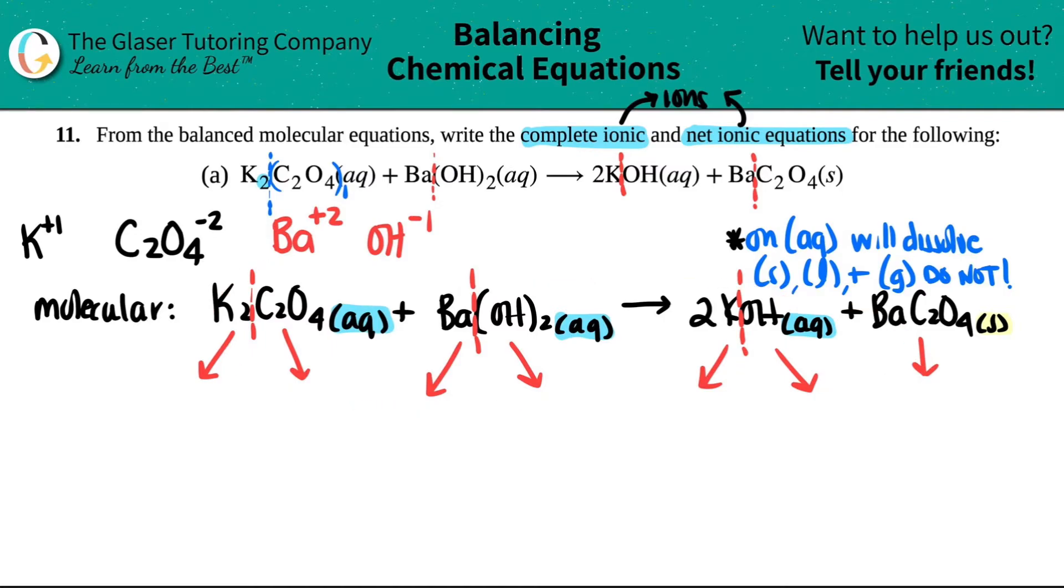Now when we break it up into its components, or the ions, we do the breaks just like we did before. If you have something that is aqueous, it will always break up into its two components. And we knew the break was right here. So potassium is going to be on one side and the oxalate is going to be on the other. When you do this, you're now going to be forming your complete ionic equation. So that's always the next one. The complete ionic is next, and then from that information, we could finally get the net ionic equation.